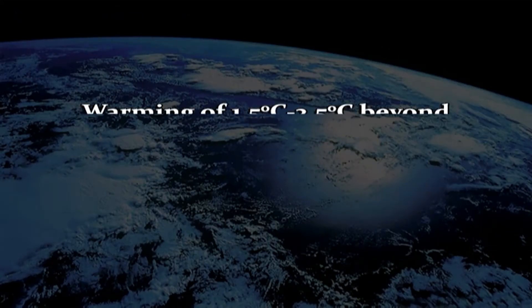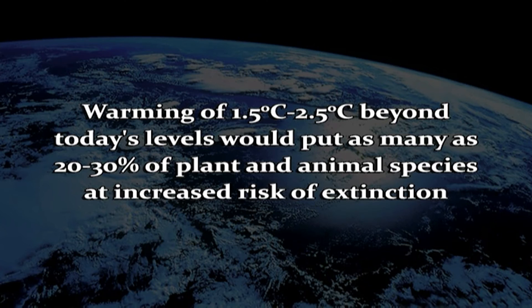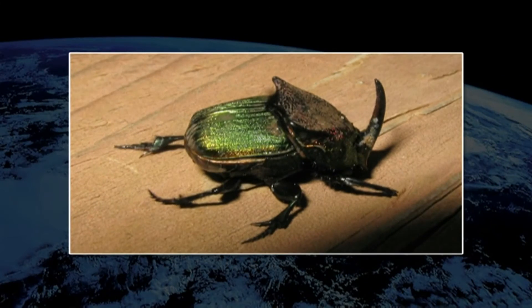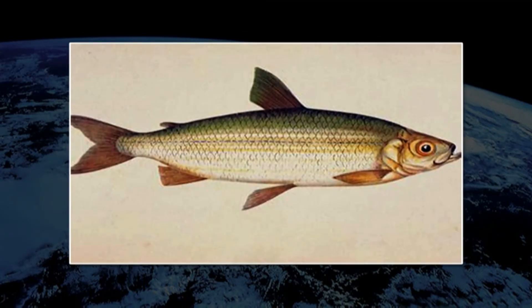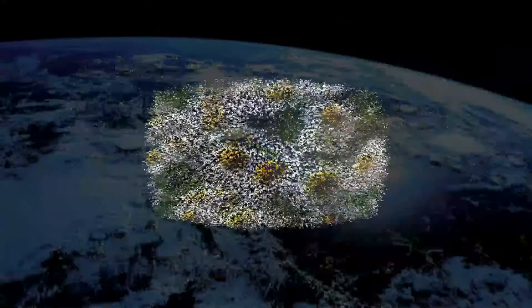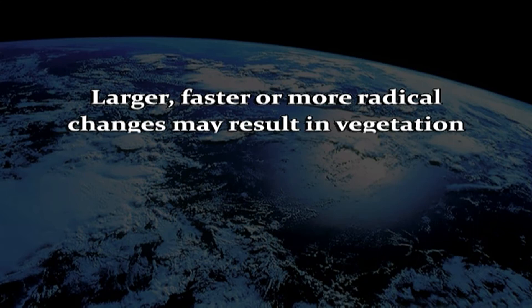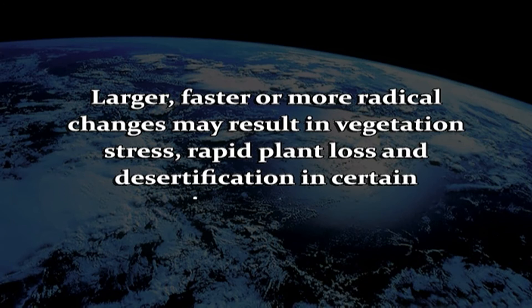Climate change is happening so fast that many plant and animal species will struggle to cope. A warming of 1.5 to 2.5 degrees centigrade beyond today's levels would put as many as 20 to 30 percent of plant and animal species at increased risk of extinction. Different species of beetles tend to be found under different climatic conditions and can be used as indicators of past climatic conditions. Similarly, the historical abundance of various fish species has been found to have a substantial relationship with observed climatic conditions. Change in the primary productivity of autotrophs in the oceans can affect marine food webs. A gradual increase in warmth in a region will lead to earlier flowering and fruiting times, driving a change in the timing of life cycles of dependent organisms. Conversely, cold will cause plant bio-cycles to lag. Larger, faster or more radical changes may result in vegetation stress, rapid plant loss and desertification.